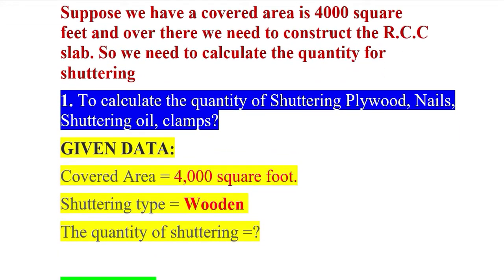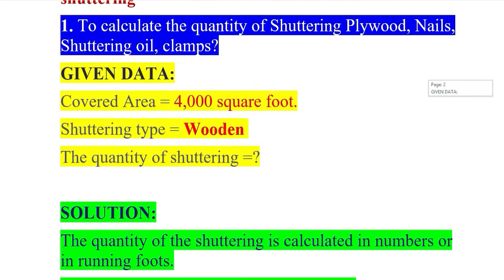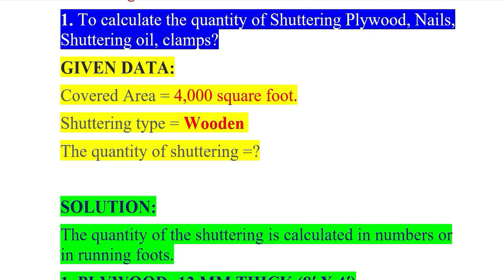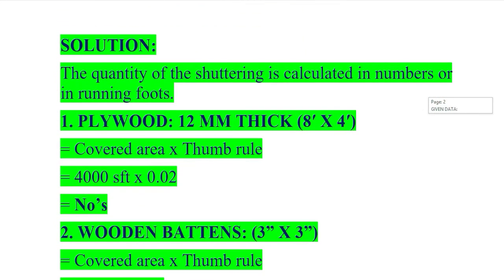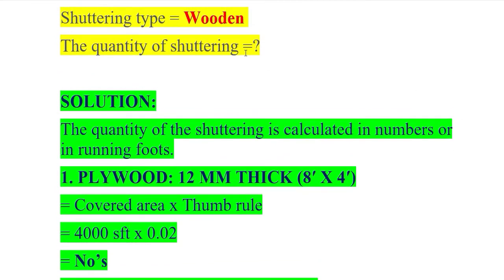Suppose we have a covered area of 4000 square feet and we need to construct an RCC slab. We need to calculate the quantity for shuttering. The materials used for shuttering include plywood, nails, shuttering oil, and MS clamps (mild steel clamps). Given data: covered area is 4000 square feet, shuttering type is wooden. Here we will use the thumb rule method to calculate the shuttering.